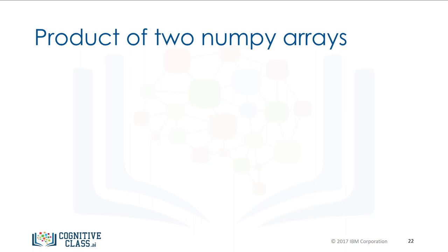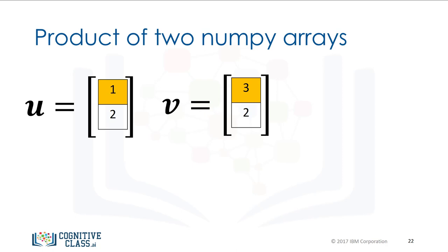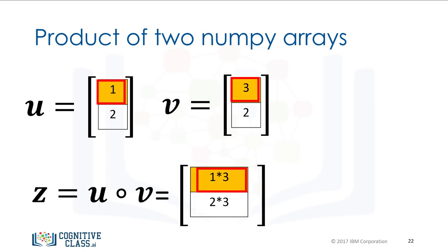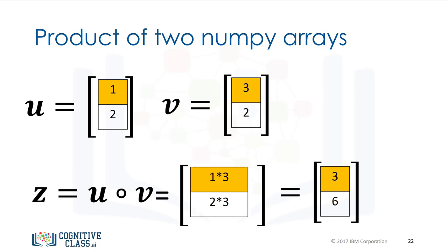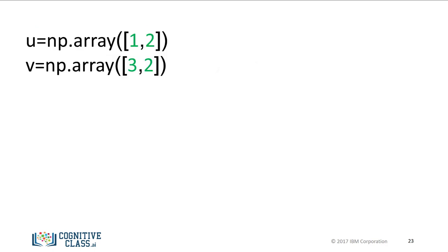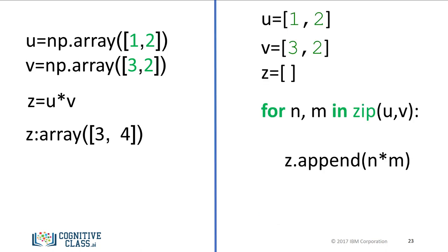The Hadamard product is another widely used operation in data science. Consider two vectors u and v. The Hadamard product of u and v is a new vector z. The first component of z is the product of the first elements of u and v, and the second component is the product of the second elements of u and v. The resultant vector consists of the entry-wise product of u and v. We can perform the Hadamard product with one line of code in NumPy, compared to multiple lines with Python lists.